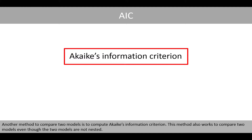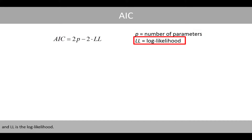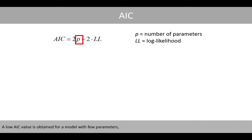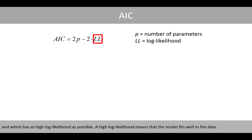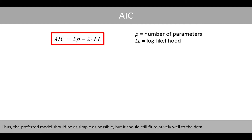Another method to compare two models is to compute the Akaike information criterion. This method also works to compare two models even if they are not nested. The AIC value is calculated as 2p minus 2 times the log likelihood, where p is the number of estimated parameters in the model. To compare models, we calculate the AIC value for two competing models and select the model with the lowest AIC value. A low AIC value is obtained for a model with few parameters and a high log likelihood, meaning it fits well to the data. To prevent overfitting, the model with more parameters gets a penalty, so the preferred model should be as simple as possible while still fitting relatively well to the data.